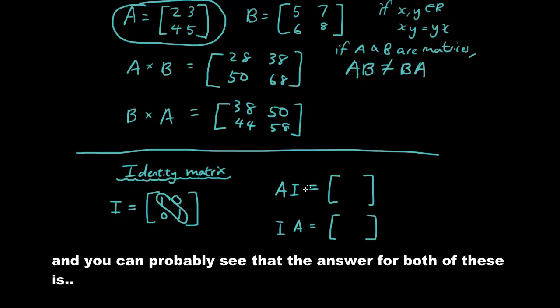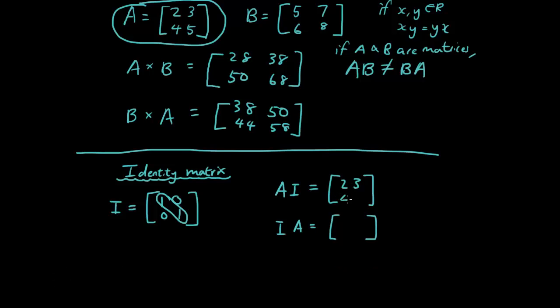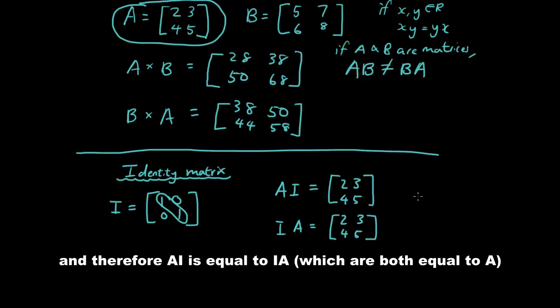And you can probably see that the answer for both of these is 2, 3, 4, 5. So 2, 3, 4, 5. And therefore A times I is equal to I times A. Right?